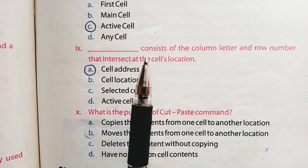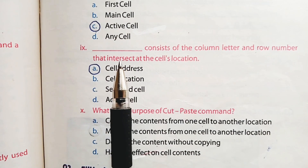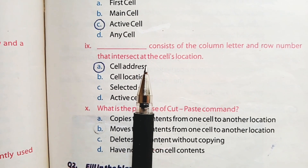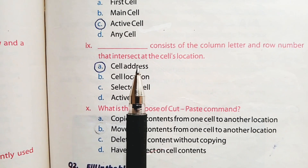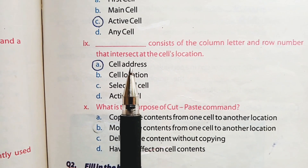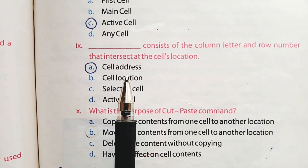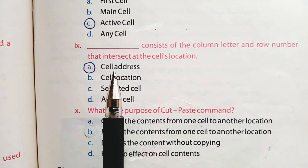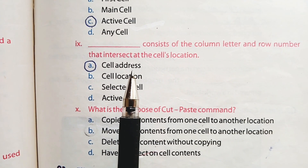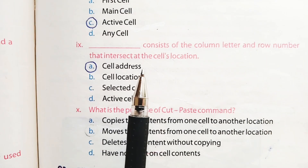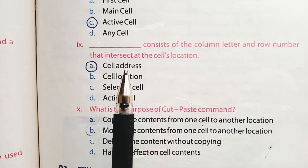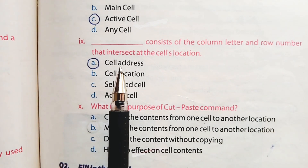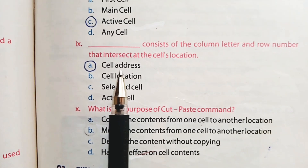Part number 9: Dash consists of the column letter and a row number that intersect at the cell's location. Option A is the right option — cell address consists of the column letter and row number. Cells are formed by the intersection of rows and columns. Columns are represented by alphabets and rows by numbers. These alphabets and numbers together form the cell address, also called the cell reference, which is used to identify the cell's location.